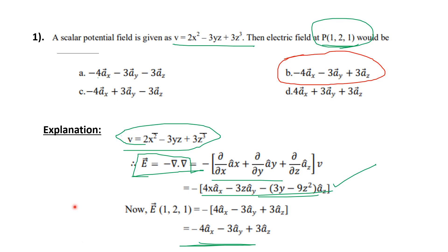Option C has minus plus minus. Here it's plus plus. So minus 4ax minus 3ay plus 3az is the correct answer.